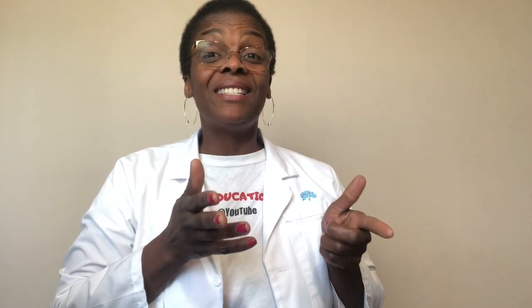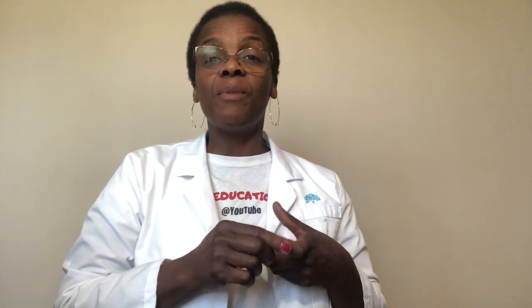Normal glucose is 70 to 110. Most resources will tell you that hypoglycemia is a blood glucose less than 60. What happens between 60 and 70? A true hypoglycemia is a glucose below 60.